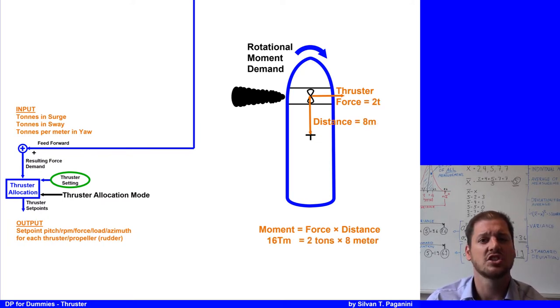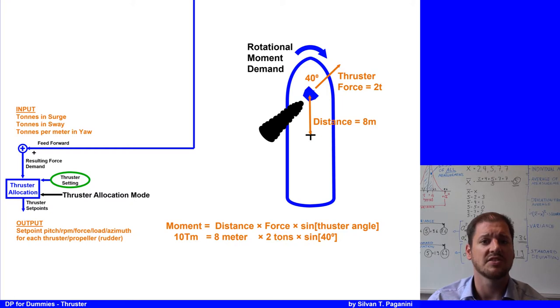Let's say the thruster force is 2 tons and the distance is 8 meters. We have a momentum of 16 tons per meter. If the thrusters are not acting at 90 degrees angle, then the 90-degree angle vector needs to be calculated. Let's say the same force and distance, but the thrust is 40 degrees off, because we are using now an azimuth thruster, which can direct the thrust in any direction. So then the formula would be momentum is equal to distance multiplied by thruster force multiplied by the sine of the thruster angle. In our example, with the same distance, same thrust, but 40 degree thrust angle instead of 90, we got only 10 tons per meter. And that's how the thruster allocation calculates the thrust needed to keep the heading, meaning yaw.